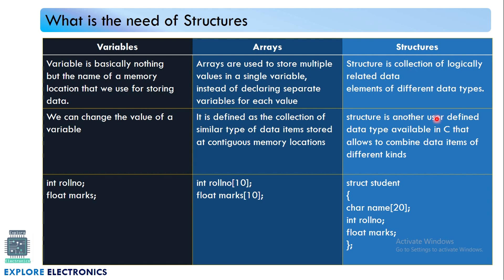We have a solution for such scenarios: structures. A structure is a collection of logically related data. We group data based on logical connection rather than data type. For example, to store student data — name, role number, and marks — we can create a structure called student that holds all three. Even though name, role number, and marks are of different data types, we can group them together. That is why structures make it easy to store and manipulate multiple data items of different data types.